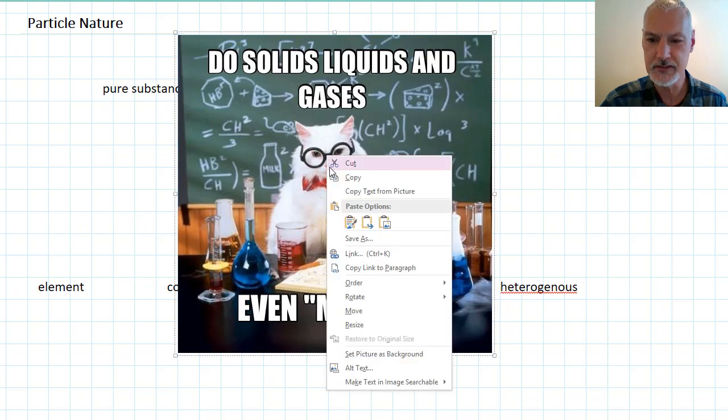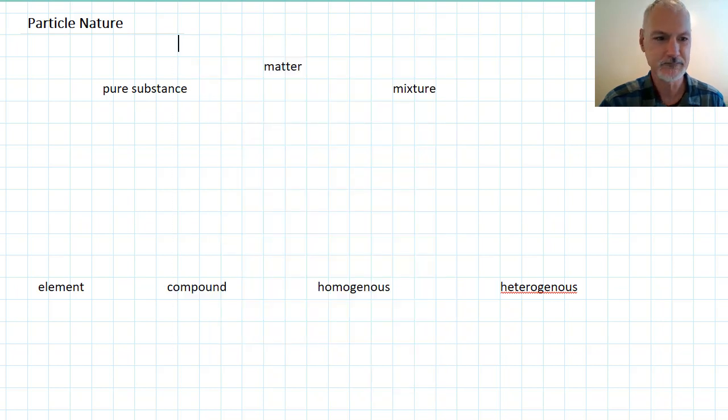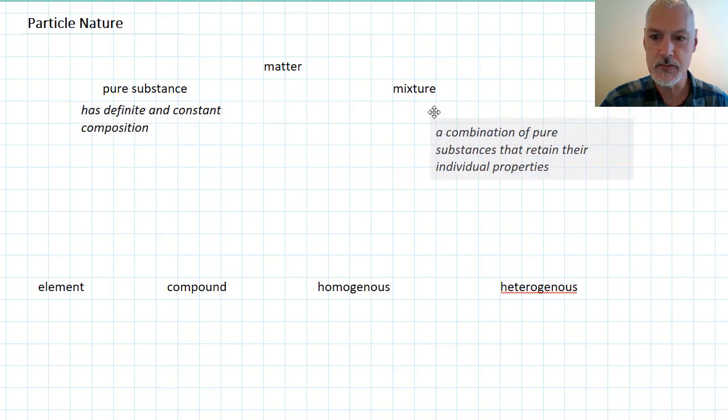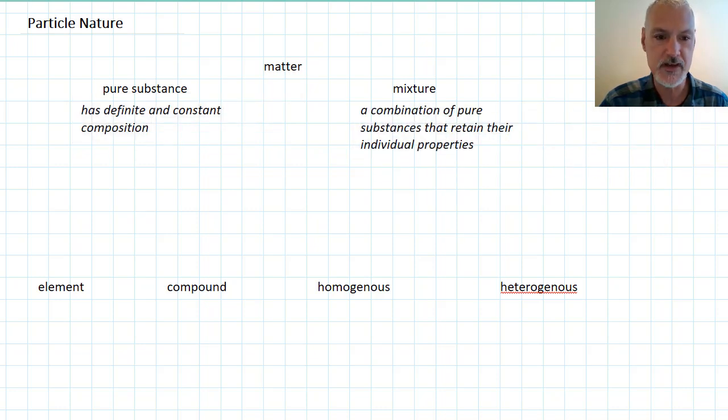But first, let's create a little bit of room. Matter is anything that takes up space. We then divide that concept into two ideas. Matter, which is a pure substance, which we define as having a definite and constant composition, and a mixture, which is made from a combination of pure substances.